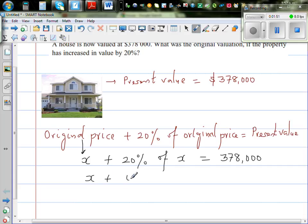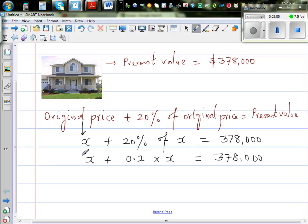So this is nothing but X plus 20% as a decimal is 0.2 times X is equal to 378,000. You don't need to remember any formulas if you go through this thinking process. This is 1X plus 0.2X.